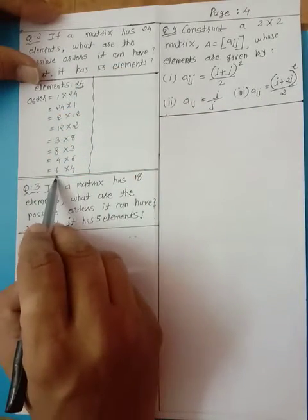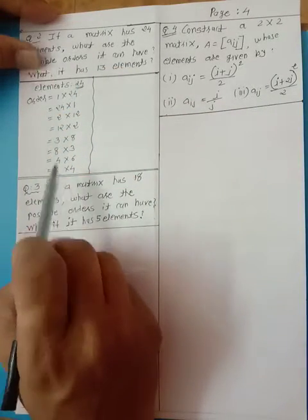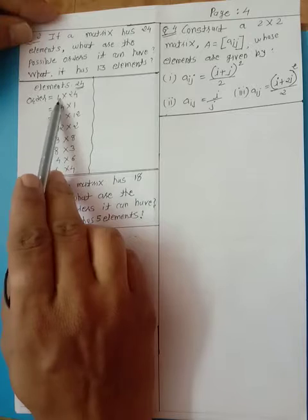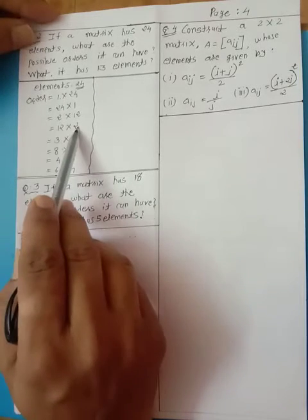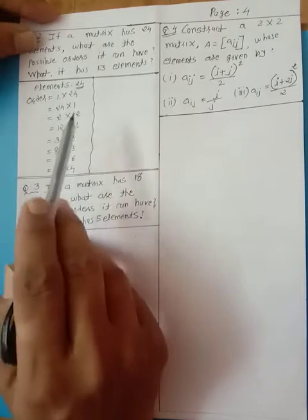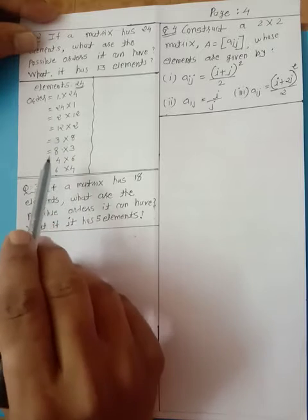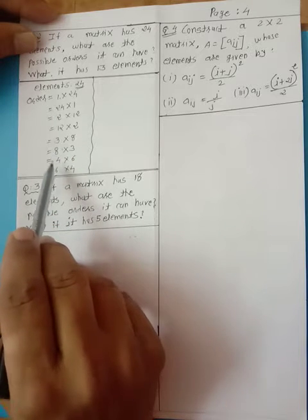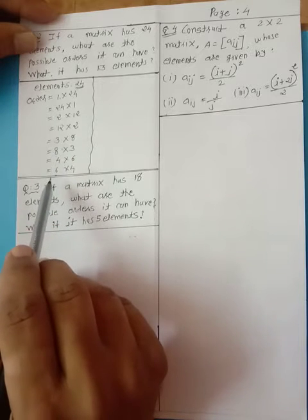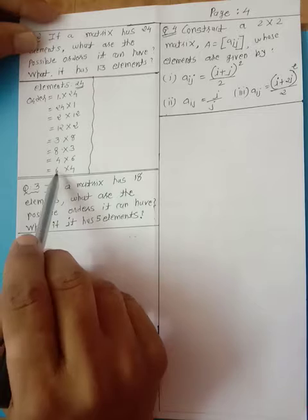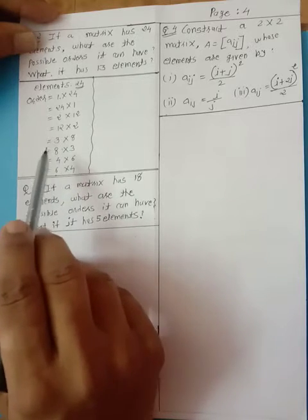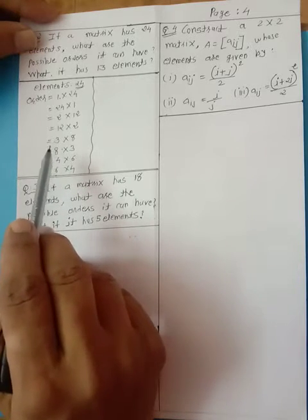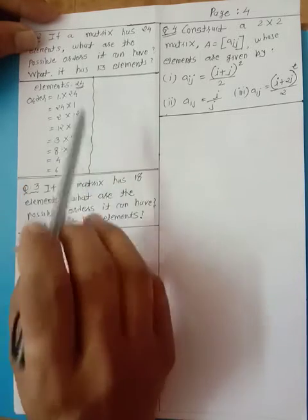I have divided: 1, 2, 3, 4, 5, 6, 8, 9, 10, 24 — listing all factor pairs for 24.